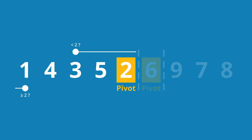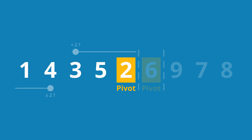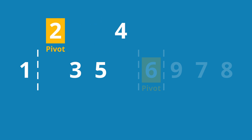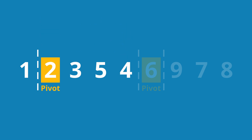We swap the 3 and the 1. The left search position moves one more field to the right and is then directly next to the right search position. That means we don't have to swap any more elements. The 4 is greater than the pivot element, so it belongs in the right partition. Accordingly, we draw the separator to the left of the 4. We again swap the pivot element with the left element of the right partition and separate the section to the right of the pivot element.